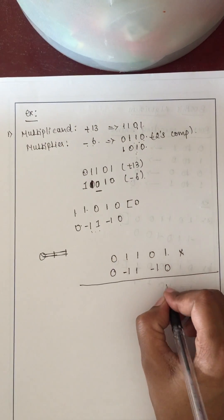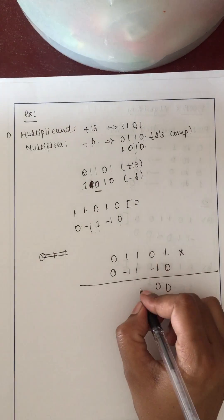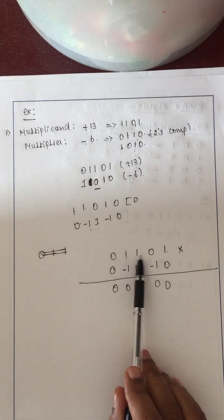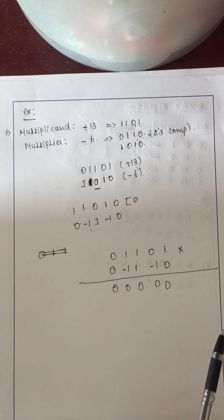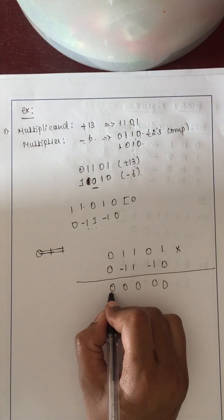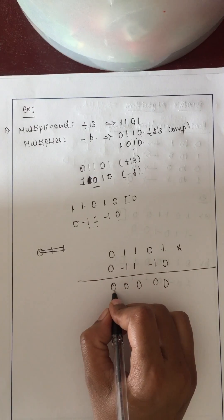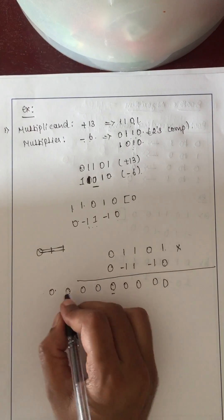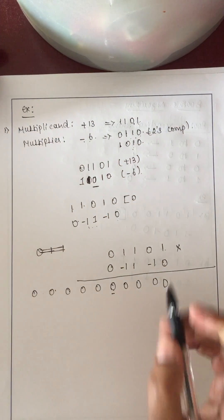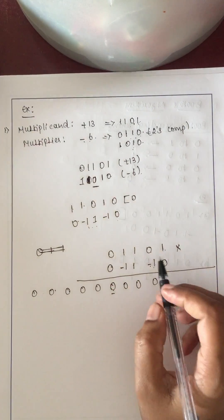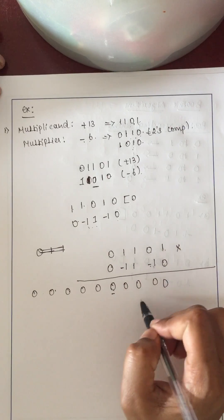Start multiplying each recoded digit by the multiplicand. For the 0 terms, all partial products are zero. Since Booth's algorithm generates 2n-bit products and n=5, we need 10-bit products — extend each partial product by sign-extending the MSB. For 0 entries, extend with zeros. For -1, take the 2's complement of the multiplicand 0 0 1 0 1, giving 1 1 0 1 1, then sign-extend with 1s.